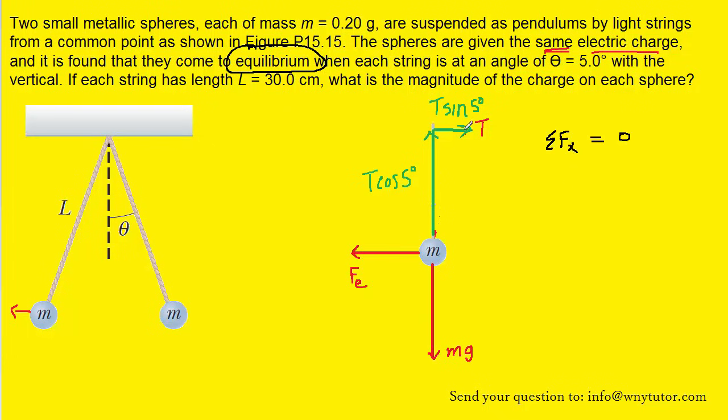Starting with the x direction, we can see that there are two forces acting in the x direction. We have the positive T sine of 5 degrees, and the negative Fe, negative because it's pointing to the left. So we can include those in the sum of the forces in the x direction.